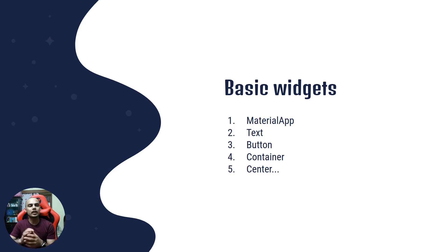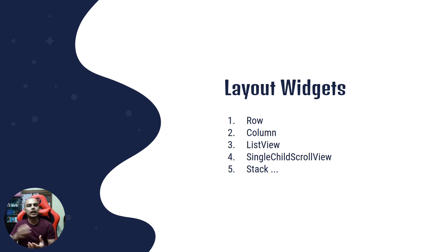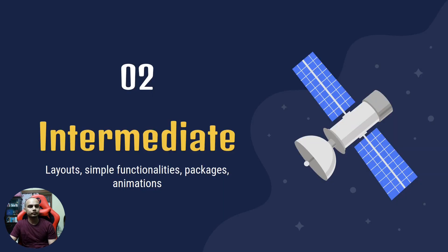First we'll learn the basic widgets like MaterialApp, Text, Button, Container, Center, etc. You can find the list of these and more widgets in the Flutter widget catalog at flutter.dev. Next, once you know the basic widgets, you'll move on to layout widgets like Row, Column, ListView, SingleChildScrollView, Stack, and many more that you can find again in the widget catalog.